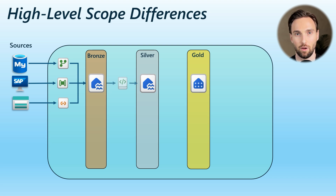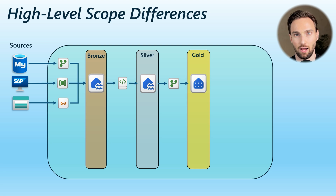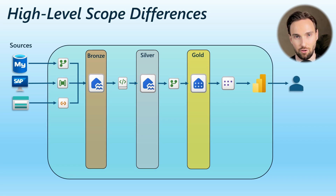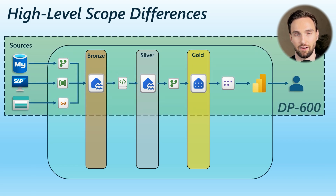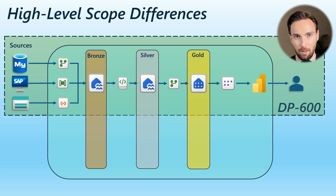We can use a notebook to process data from the bronze layer to the silver layer, then a Data Flow to write it to the Data Warehouse as our gold layer. On top of that, a Semantic Model sits over the Data Warehouse, and Power BI reads that data for reporting, making reports available to business users. This is essentially the overall scope of the DP600 exam, covering Lakehouses, Data Warehouses, notebooks, Data Pipelines, Data Flows, shortcuts, Semantic Models, and Power BI.